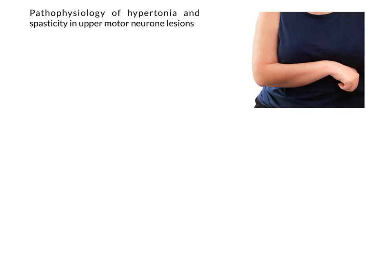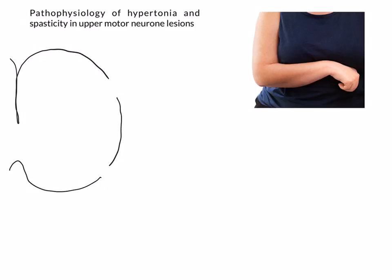The way that we can understand how hypertonia comes about following upper motor neuron lesions is by looking at the monosynaptic reflex arc in a bit of detail. So let's draw this out for you. It's a very simple reflex arc — you should all be incredibly familiar with the basic monosynaptic reflex arc.